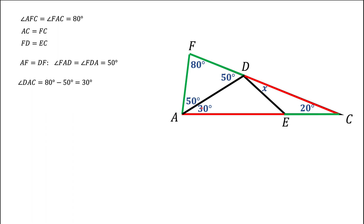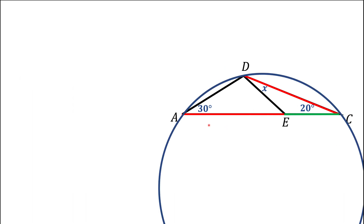The next step is something covered previously in one of the earlier videos, with a link provided. What we're going to do here is put a circle around triangle ADC — we're going to take this triangle ADC and inscribe it in the circle. We're going to continue producing isosceles triangles, but before we do, we need a little bit of theory.